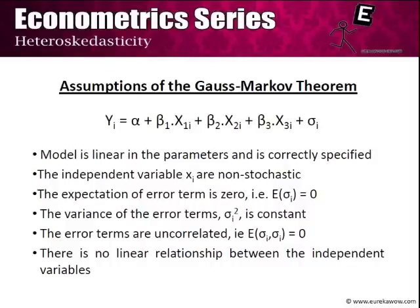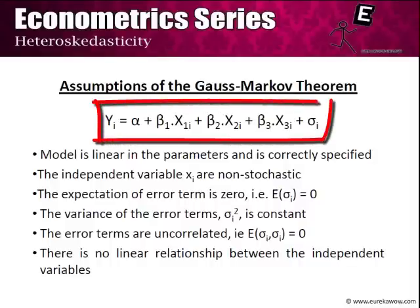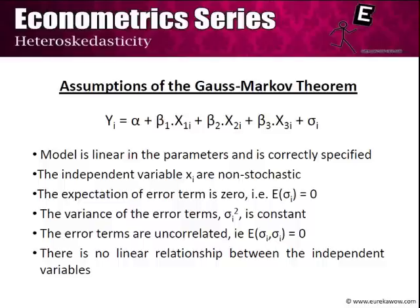Assume a population regression function such as yi is a function of x1, x2, x3, and in its stochastic form, the error term sigma i. We've been considering six assumptions, and the assumption that concerns us in this section is the fourth one: that the variance of the error term sigma i squared is constant for all values of x's. This assumption is known as homoscedasticity, and hence a violation of this assumption is known as heteroscedasticity.